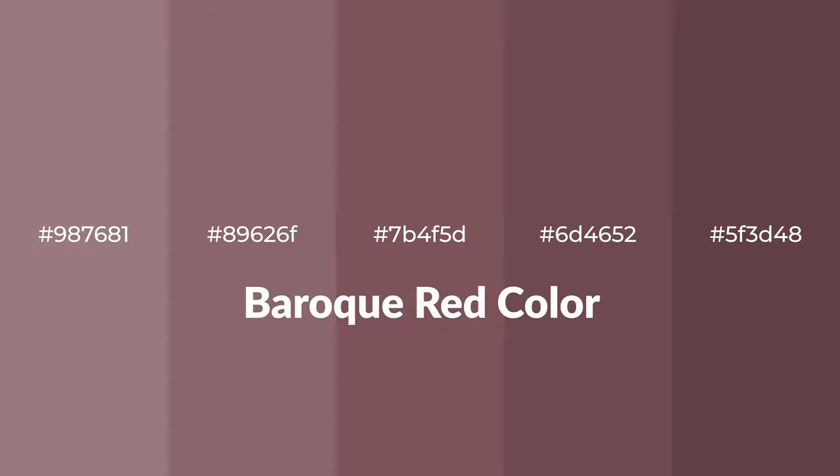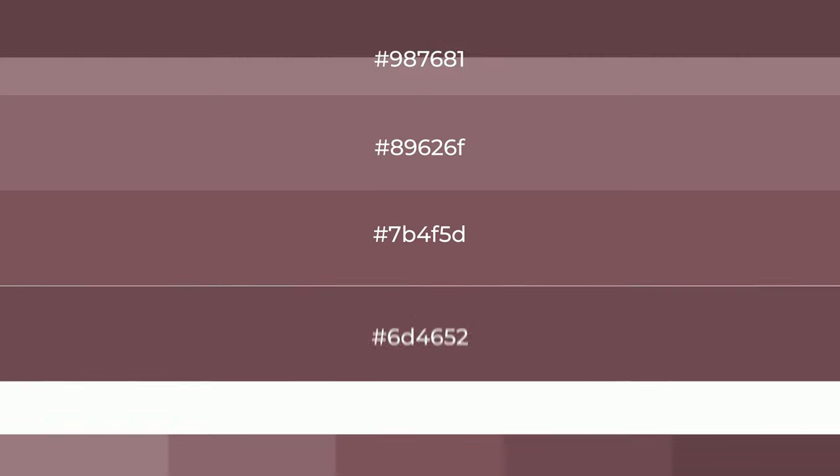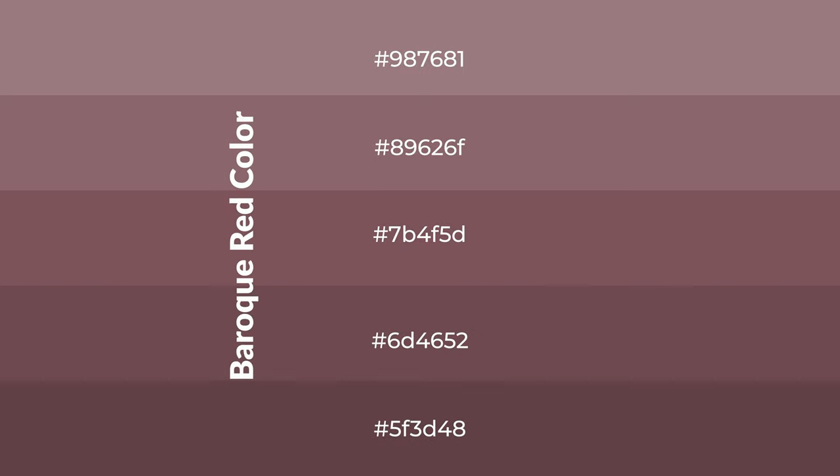Warm shades of baroque red color with violet hue for your next project. To generate tints of a color, we add white to the color — tints create light and exquisite emotions. To generate shades of a color, we add black to the color, and it is used in patterns, 3D effects, and layers. Shades create depth and drama.